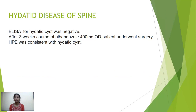This was the case of hydatid disease of the spine. ELISA for hydatid cyst was negative, but after a three-week course of albendazole 400 mg once daily, the patient underwent surgery and histopathological examination was consistent with hydatid cyst.